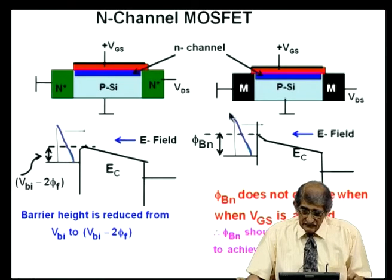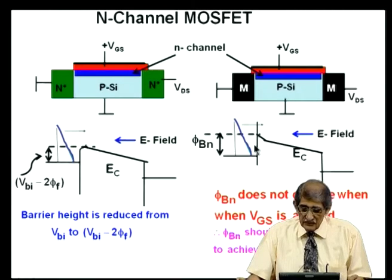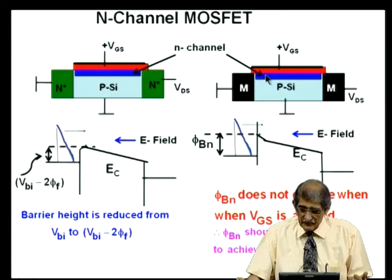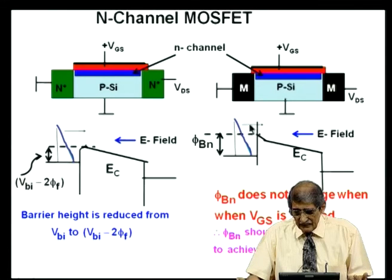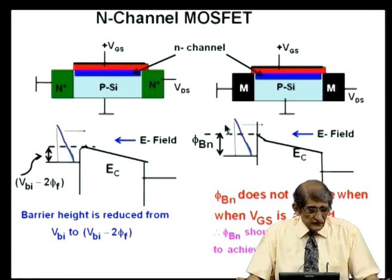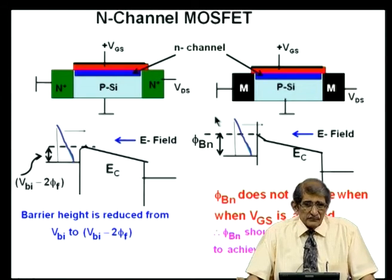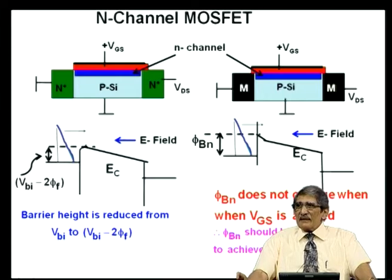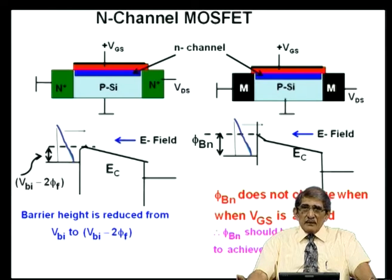So, if you want to have a large supply of electrons, φBN should be small — the barrier height should be small. That means, ideally it should make an ohmic contact to this channel. The electrons which are injected can roll down because of the voltage drop in the channel. The current will be limited by the supply available. So you need to reduce the barrier height φBN. If φm is small, it will give ohmic contact ideally.